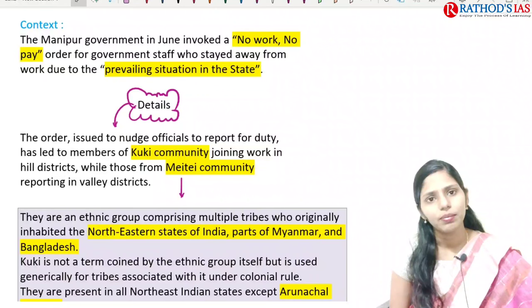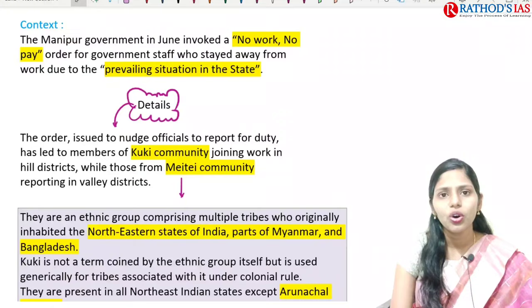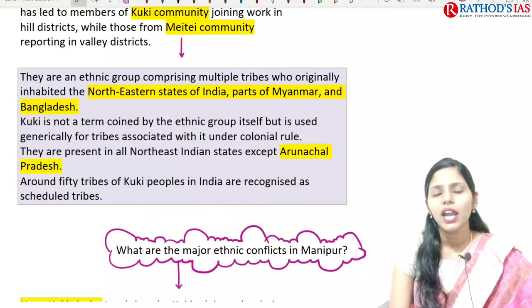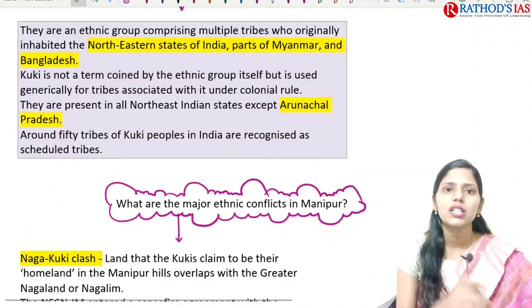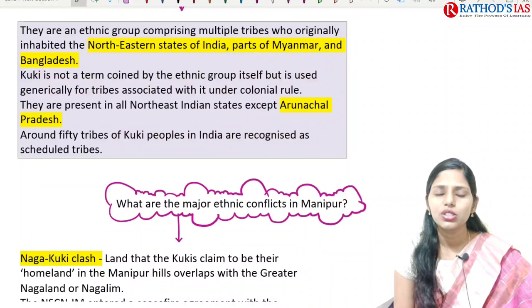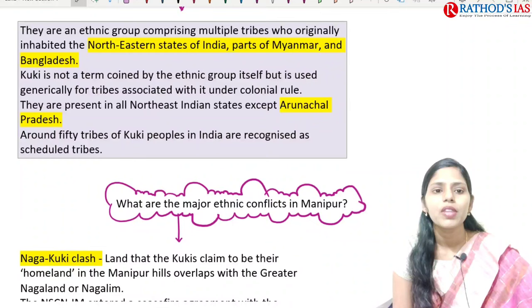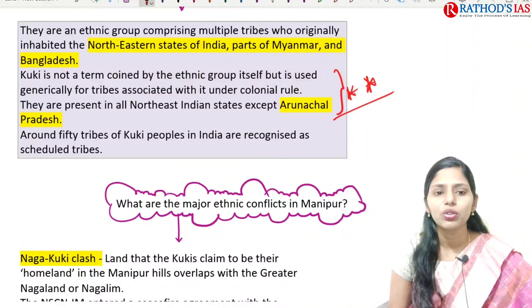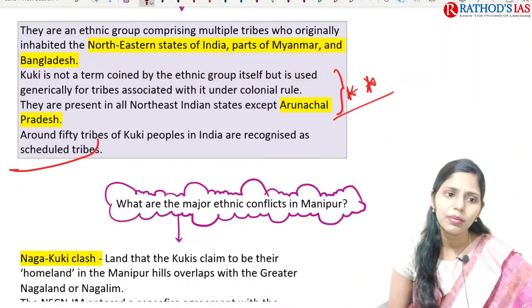Who are Kukis? They are an ethnic group comprising multiple tribes who originally inhabited the northeastern states of India and are also present in Myanmar and Bangladesh. The term 'Kuki' is not coined by the ethnic group itself but is generally used for tribes associated with colonial rule. They are present in all northeastern states except Arunachal Pradesh. Around 50 tribes of Kukis in India are recognized as Scheduled Tribes.